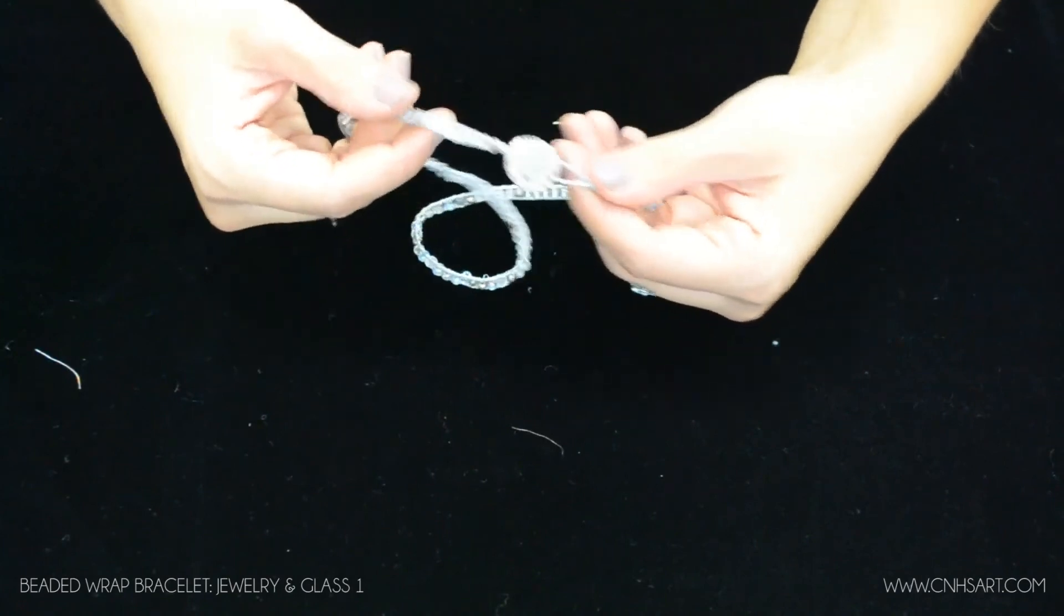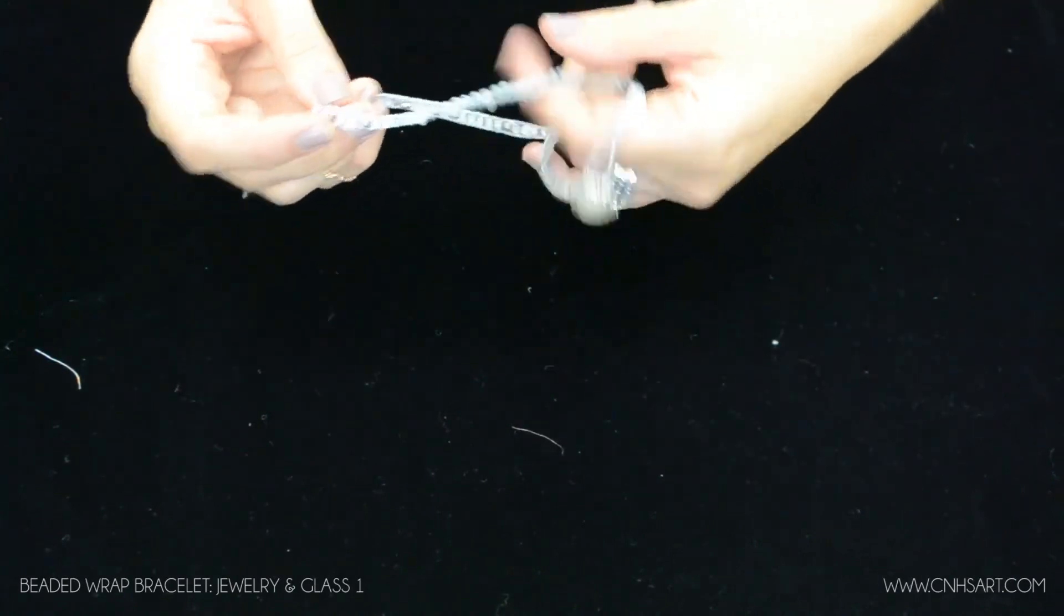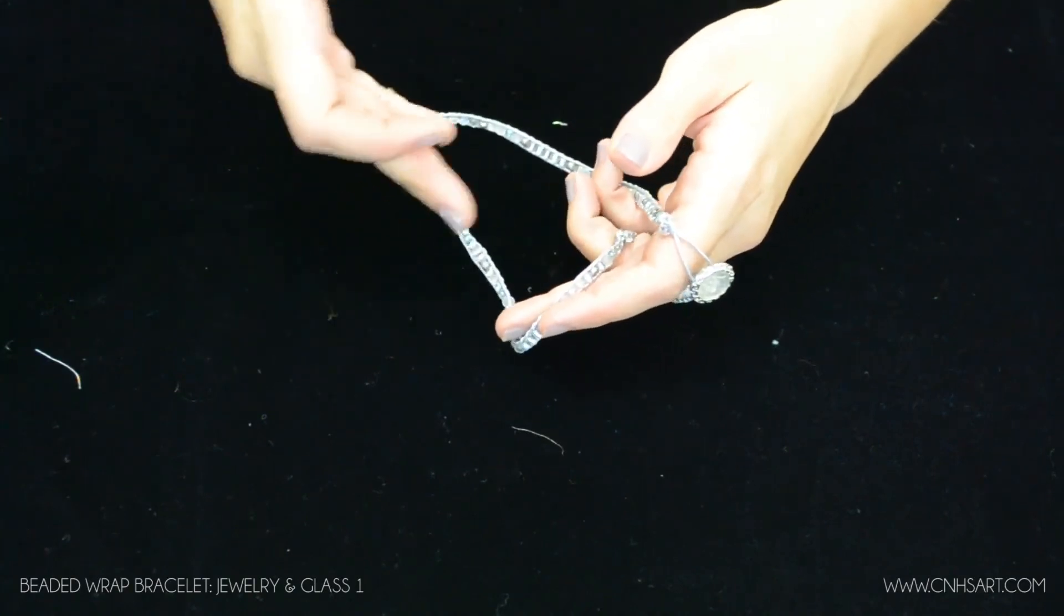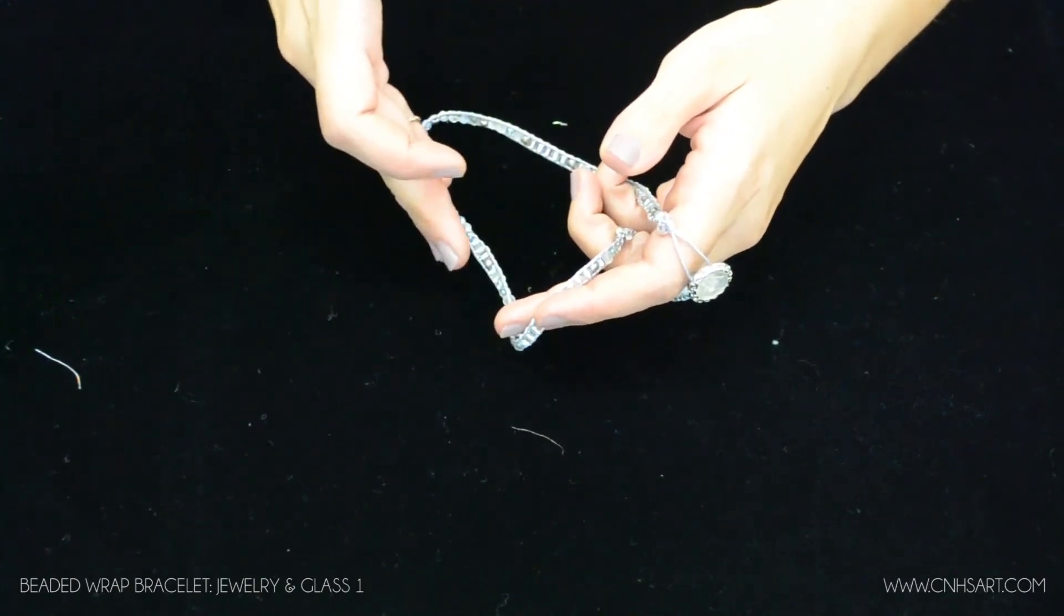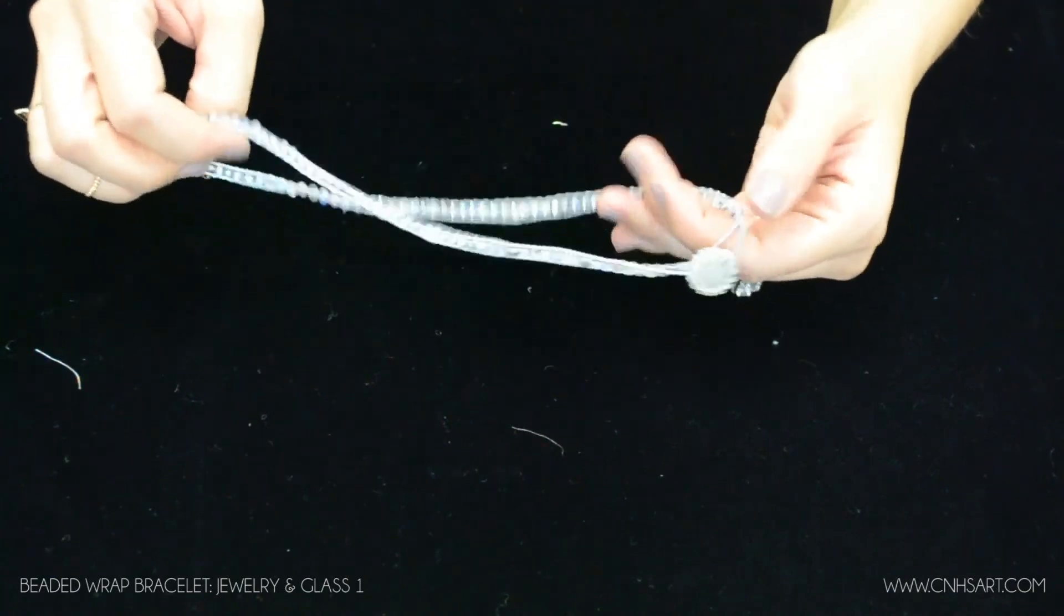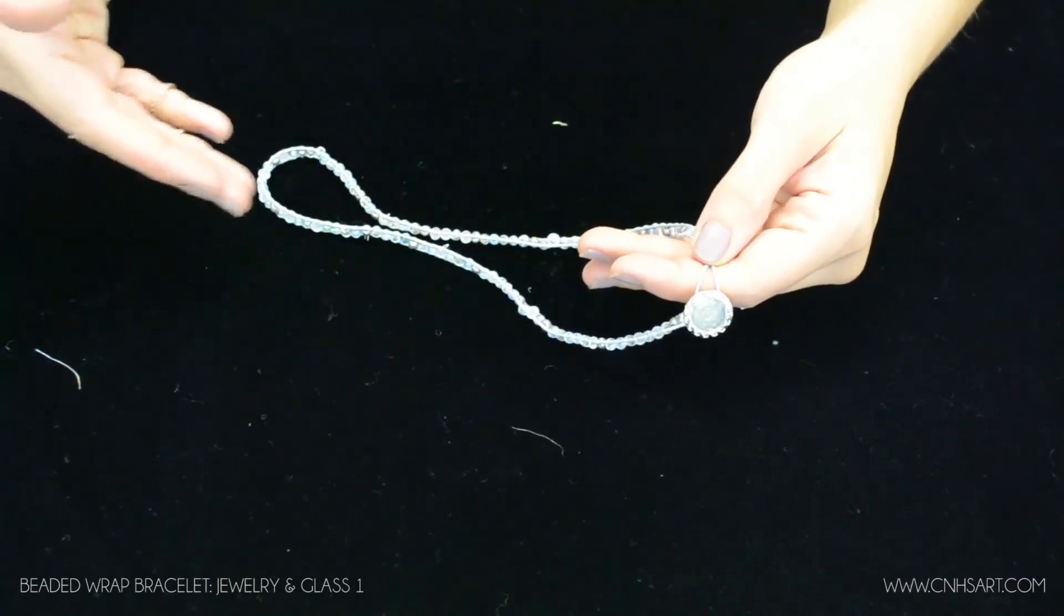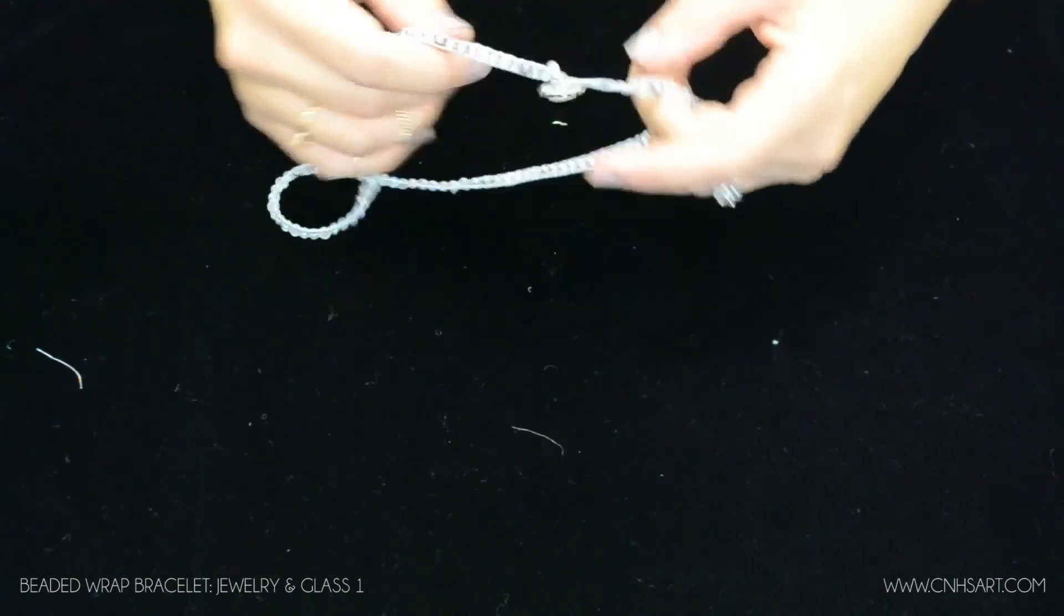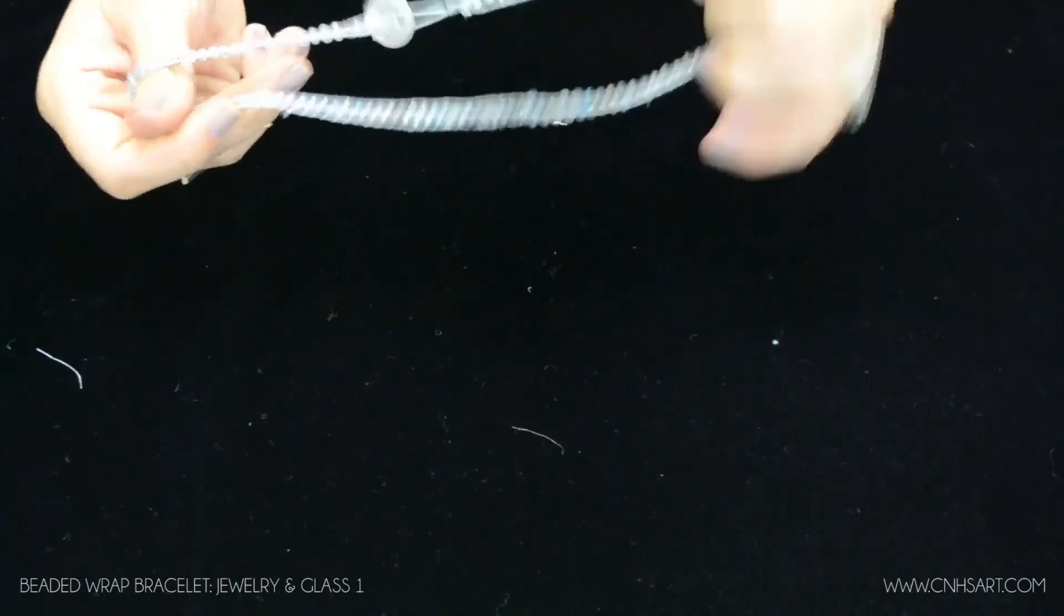And now you're all finished up. And like I had said before you can do several variations of this. You could actually run multiple cords so that you could have more than one row of beads. And you could do different types of beads. If you wanted to do larger beads, smaller beads, there's a million different things you could do with this. So that is the beaded wrap bracelet.